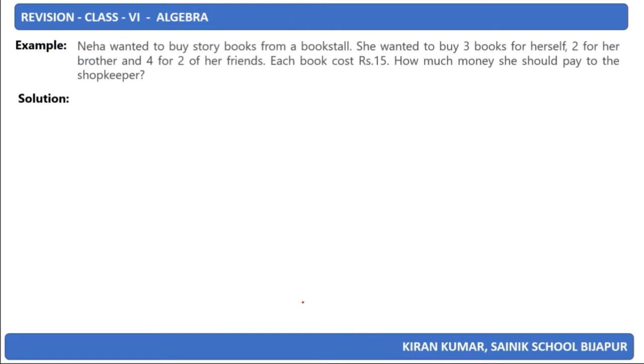Let's look at an example. Neha wanted to buy story books from a book stall. She wanted to buy 3 books for herself, 2 books for her brother, and 4 for 2 of her friends. Each book costs Rs 15. How much money should she pay to the shopkeeper? Here, the cost of 1 book is Rs 15, and we need to find the cost of 9 books.